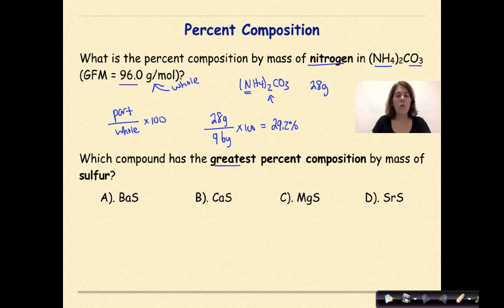Which compound has the greatest percent composition by mass of sulfur? All right. So what I would suggest doing for this one is looking at the formulas that are given to us. If we look at them, we notice that in each of these compounds, it is a 1 to 1 ratio between the element that is combined with the sulfur as we go through.